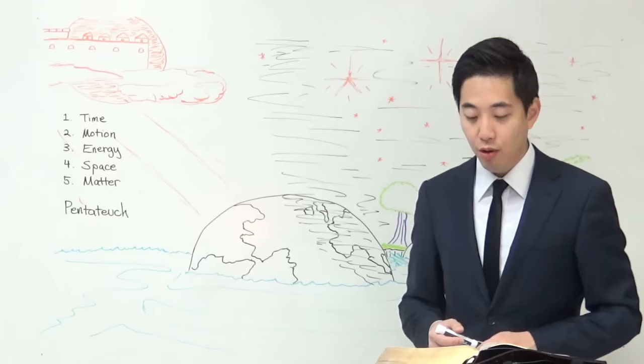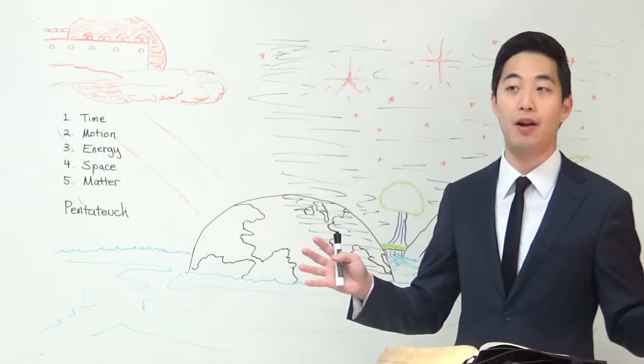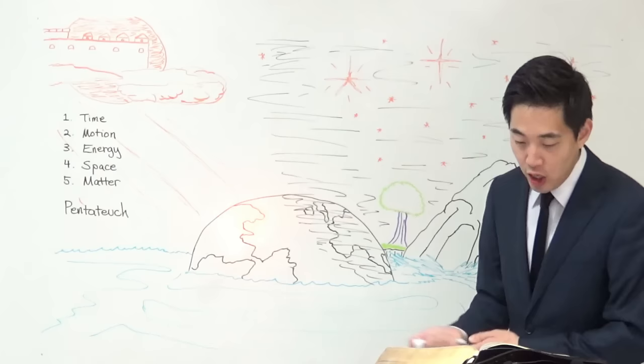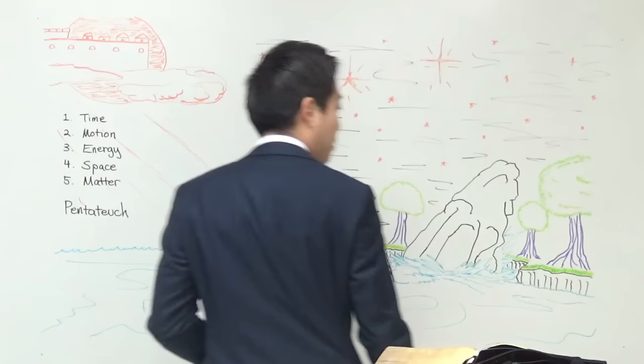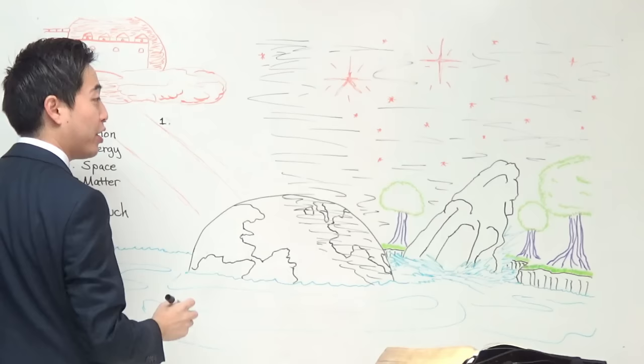Continuing at Genesis 1:1, you notice that the verse automatically debunks all philosophical beliefs and all false religions. Genesis 1:1 alone debunks everything. For example, it debunks polytheism — in the ancient times they believed in more than one God. But the Bible says "In the beginning... God" — singular. So polytheism is out of the picture.